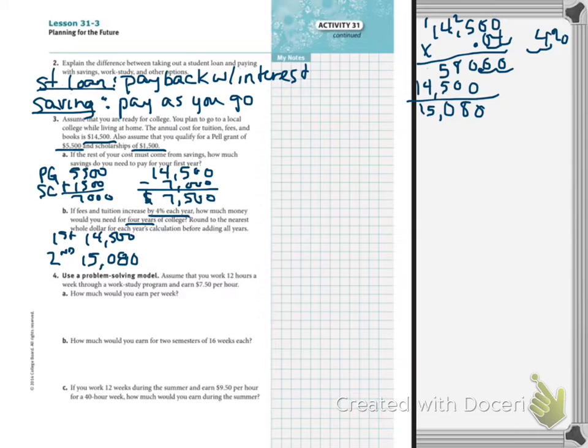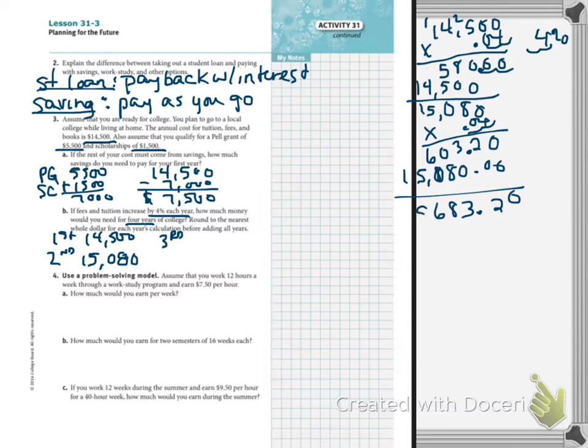So, then to find the third year, we're going to have to take that, and that's going to go up by 4%. Calculating, it's now going up by $603.20. So, we're going to add $15,080 to that. So, now we're up to $15,683.20.